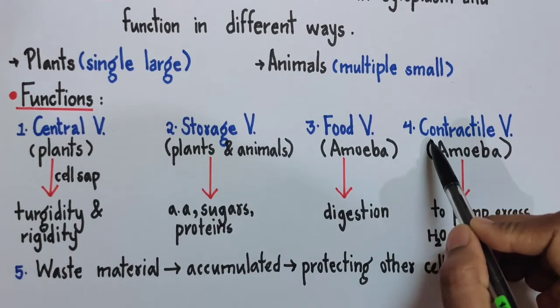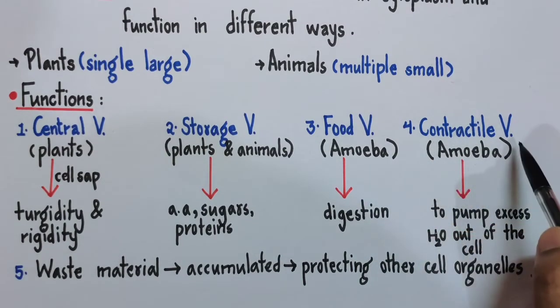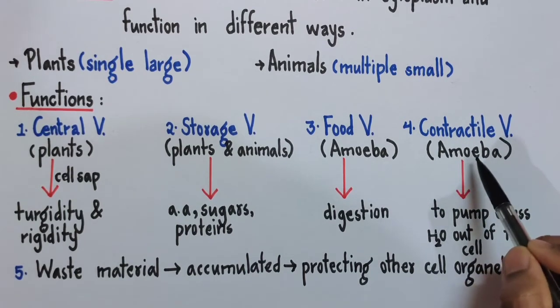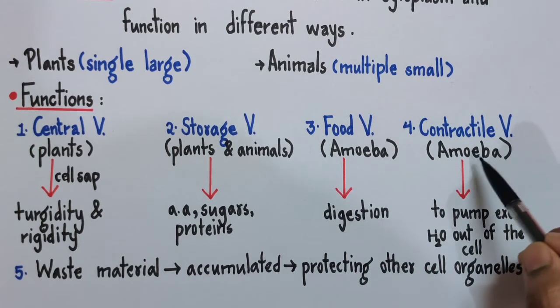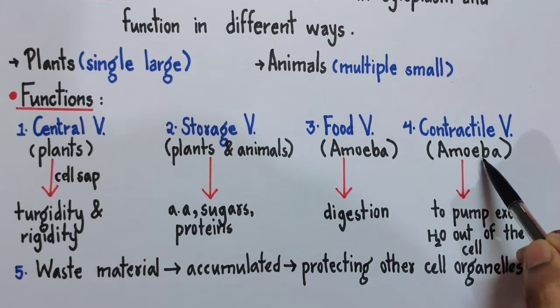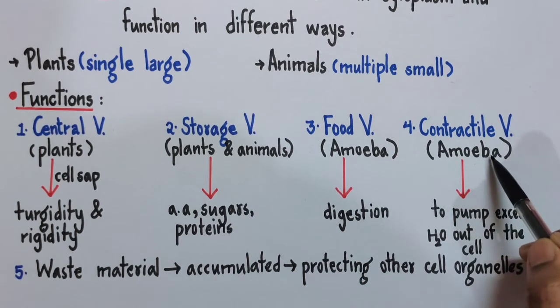We have one more type of vacuole called contractile vacuole. These vacuoles are exclusively seen in freshwater microorganisms like amoeba and paramecium. One of the major problems which these organisms face is that a lot of extra water keeps entering their cell, and they want to get rid of it.